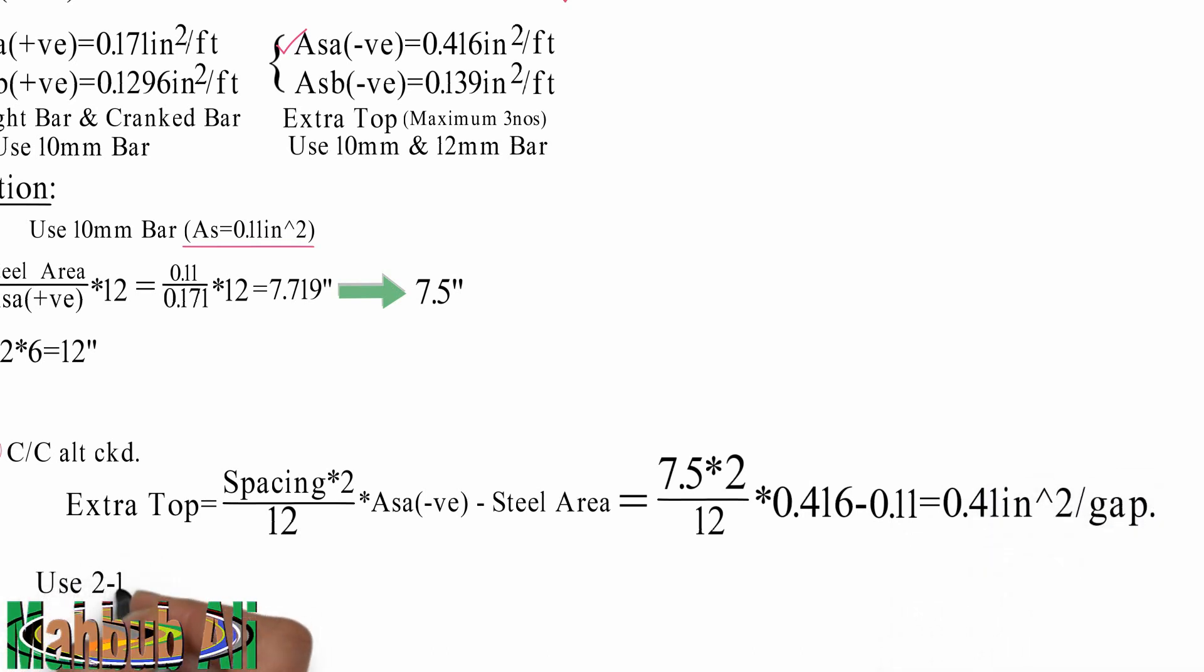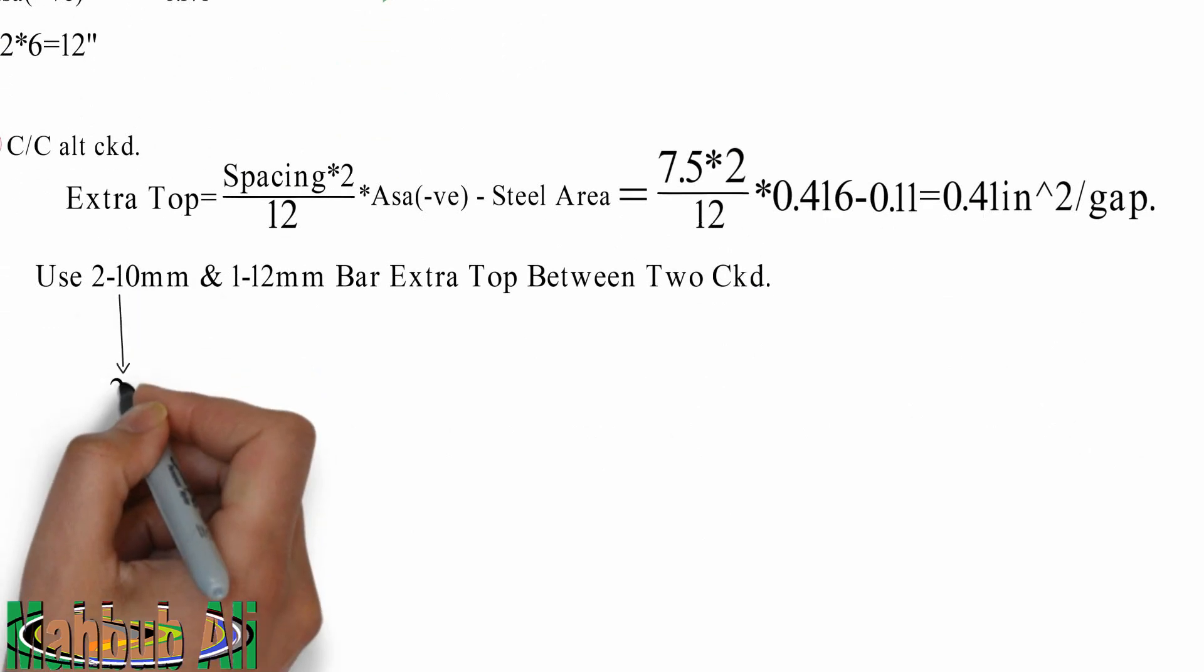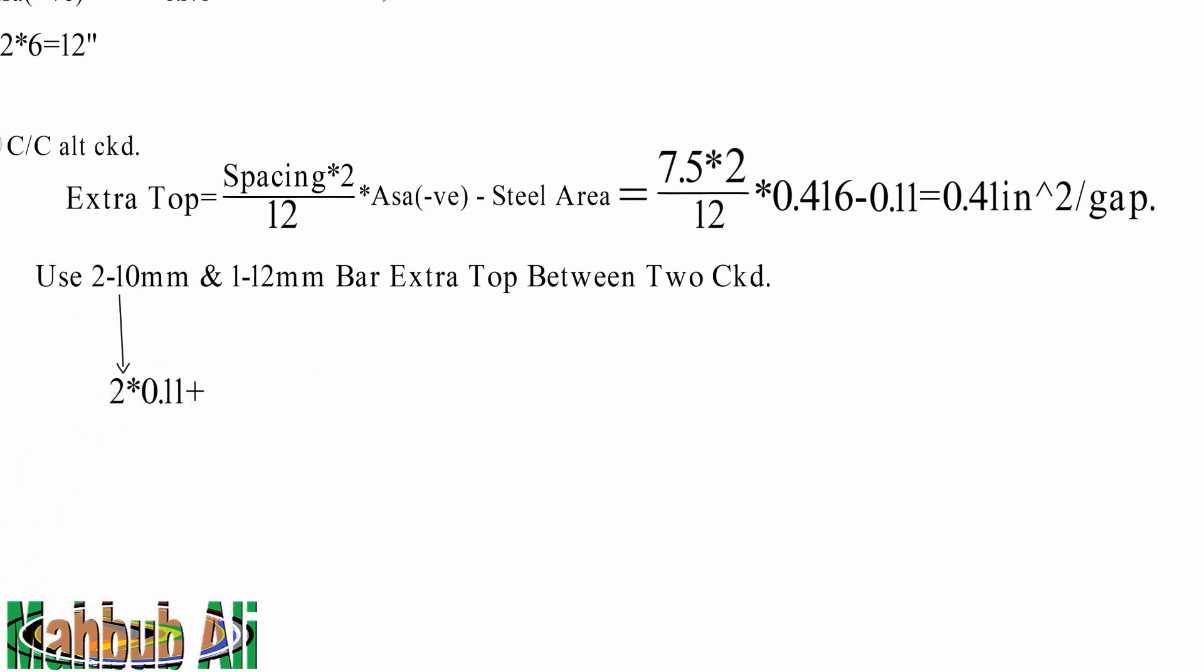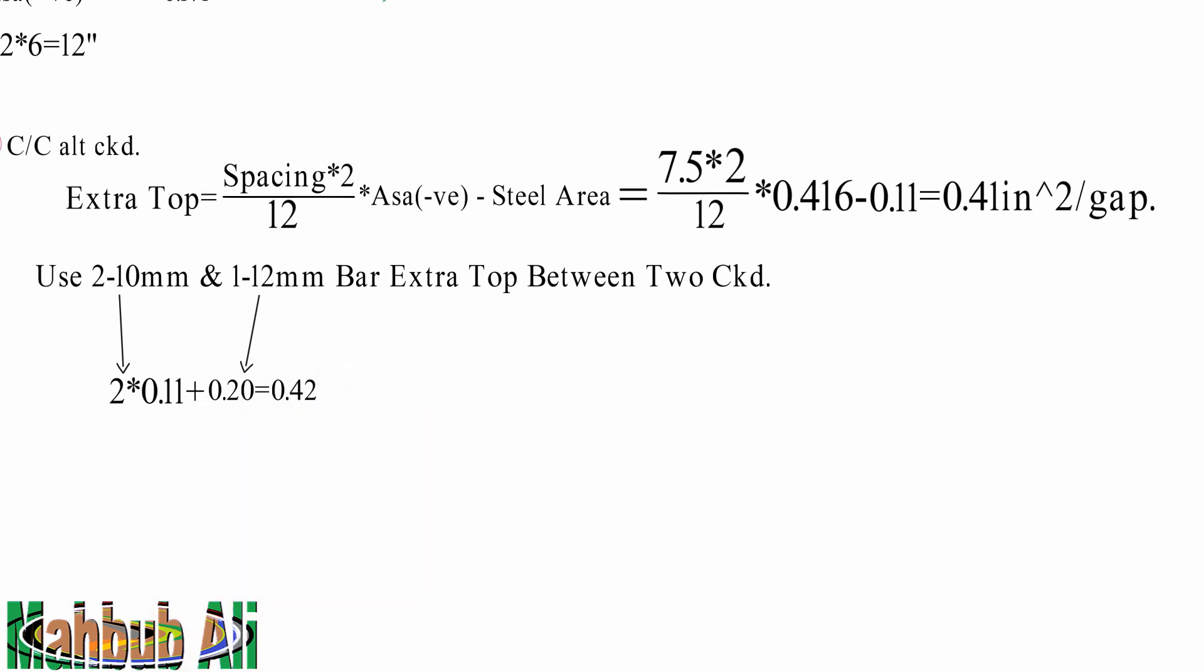Use 2 ita 10mm bar and 1 ita 10mm bar extra top between 2 crank. 2 ita 10mm bar area. 1 ita 10mm bar area equal 0.42. We required 0.41, we provided 0.42. So it's okay.